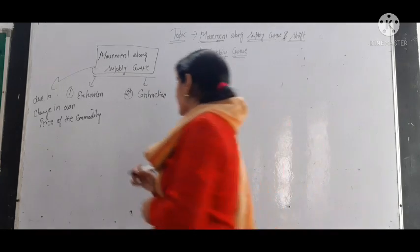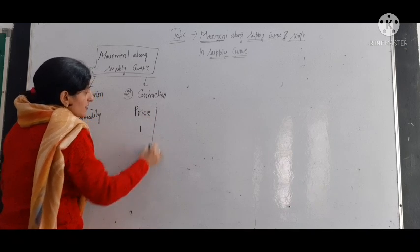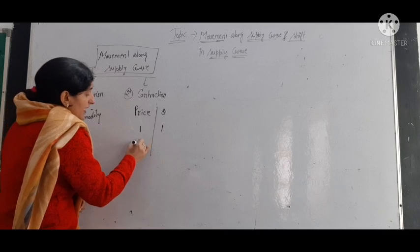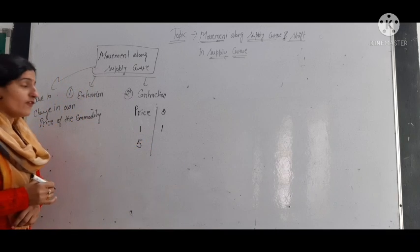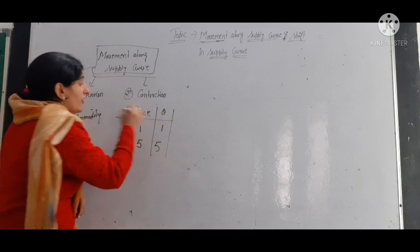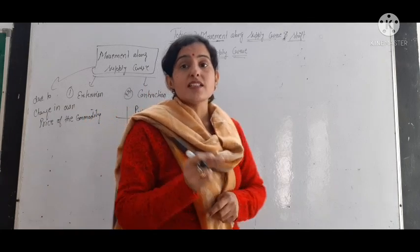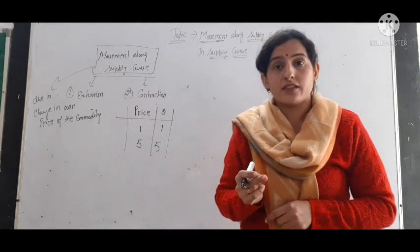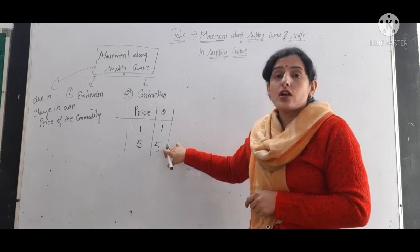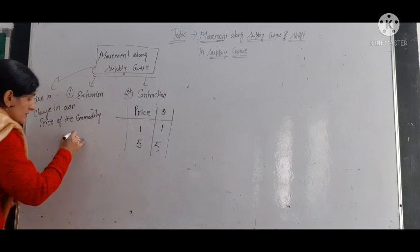For example, when the price of the commodity is 1 rupee, then the quantity supplied by the producer is 1. When the price of the commodity increases and becomes 5, then the quantity supplied by the producer is 5. As we know from the law of supply, there is a positive relation between the price and the quantity supplied — price increases, quantity supplied also increases.